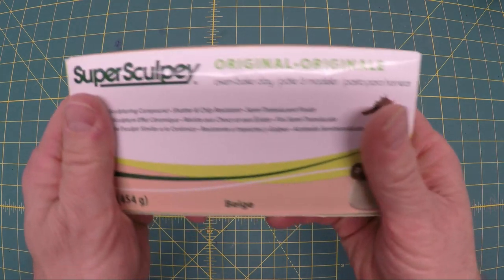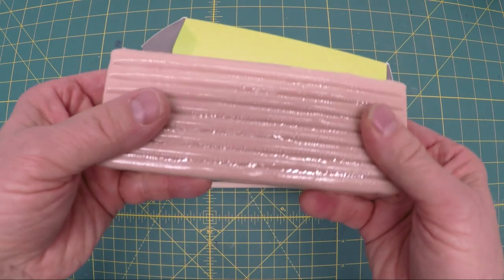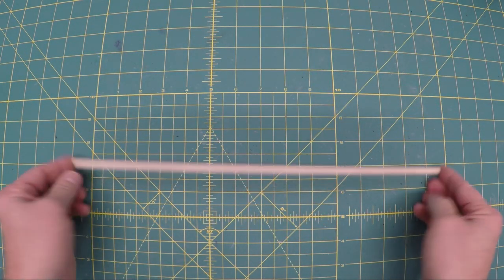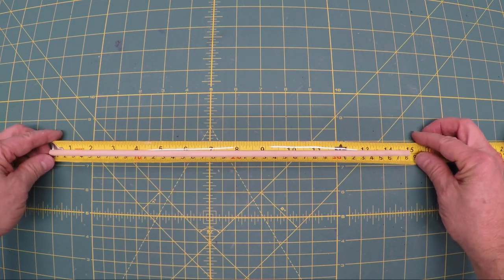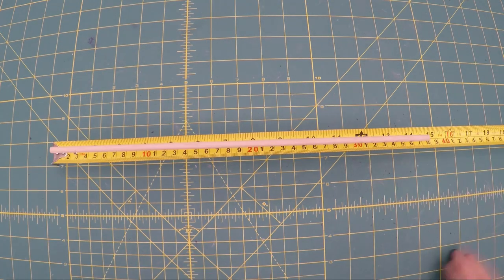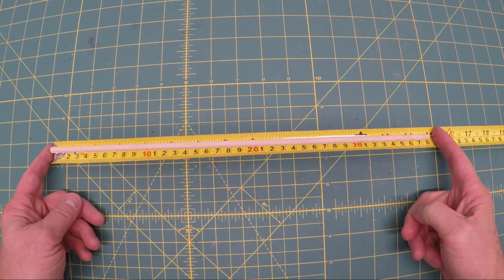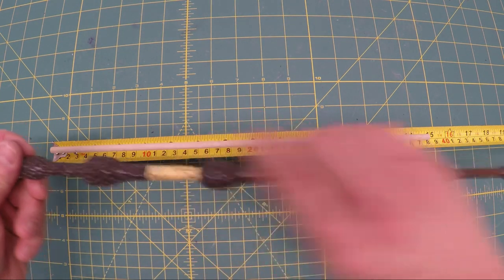So the first thing you'll need is some Super Sculpey. This is my sixth wand. You need a slightly shorter than 15 inch dowel which also turns out to be just around 38 centimeters. And how do I know that 38 centimeters is right? Because I bought an Elder Wand.